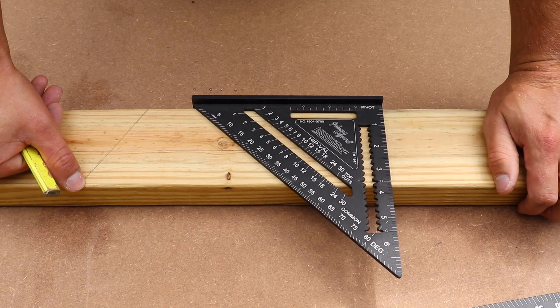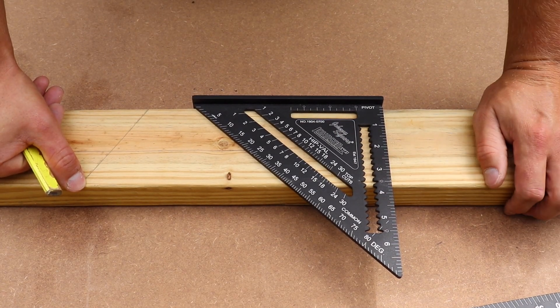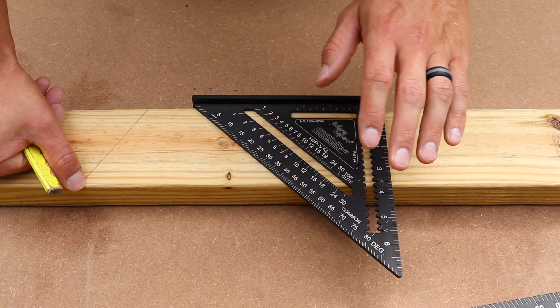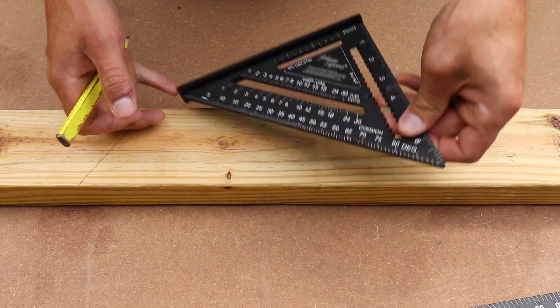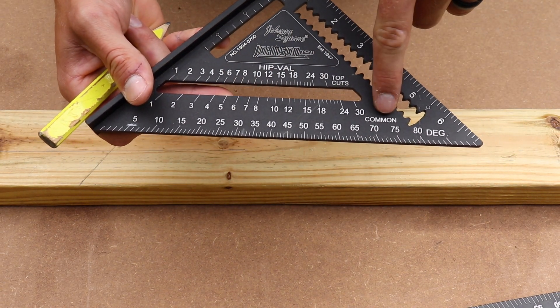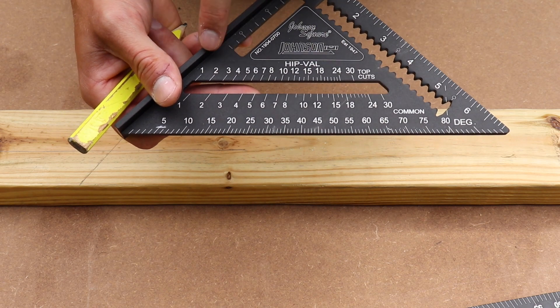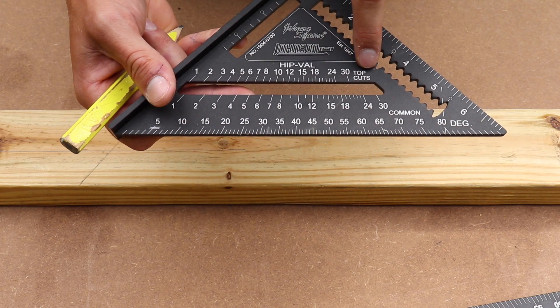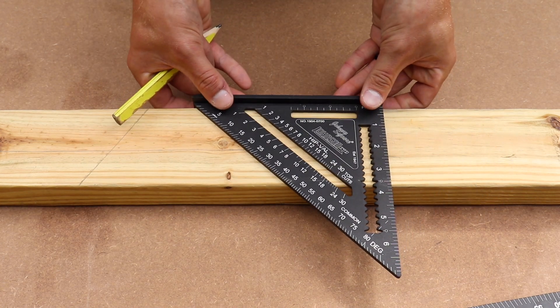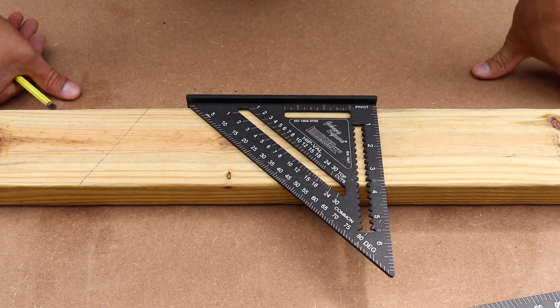Now, your speed square is also going to be used whenever you're cutting roof rafters, whether that's common rafters or hip and valley rafters. You can use the speed square to lay those out. So for the common rafters, you're going to reference this row of numbers where it says common. And for your hip and valley, you're going to reference these numbers, the hip and valley.